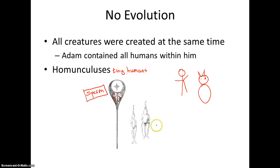But it's saying that all humans that were ever going to exist came from Adam. It's kind of hard to understand. But that is how it's simply stating. So, just remember that homunculuses are tiny humans. And that Adam contained all humans within him.